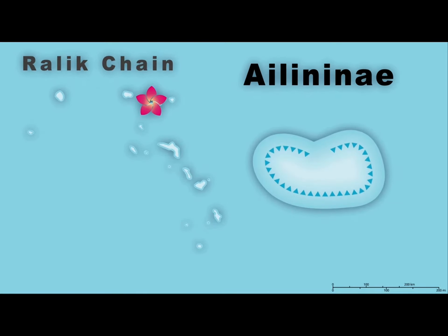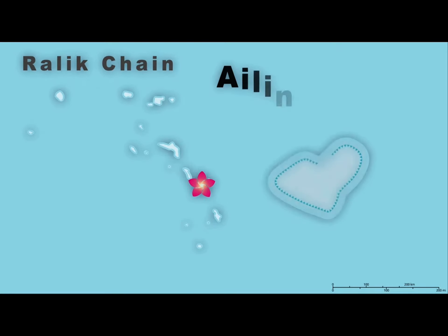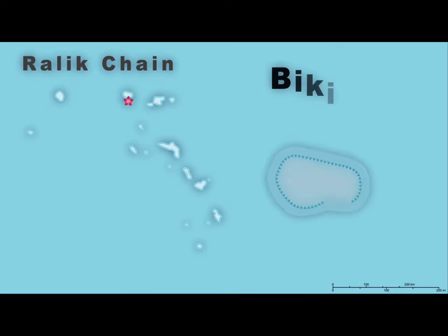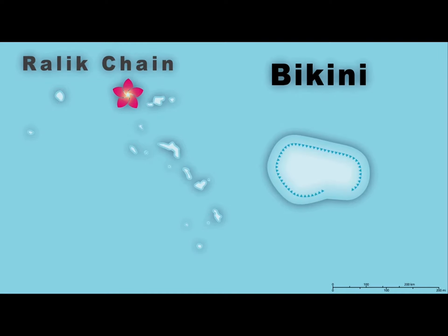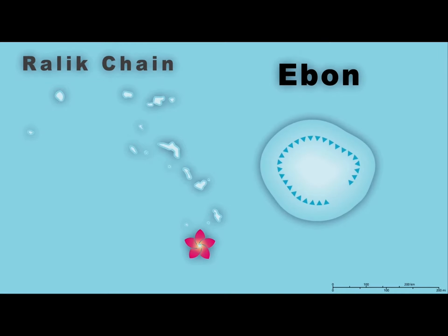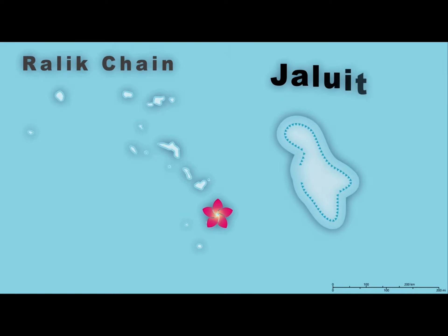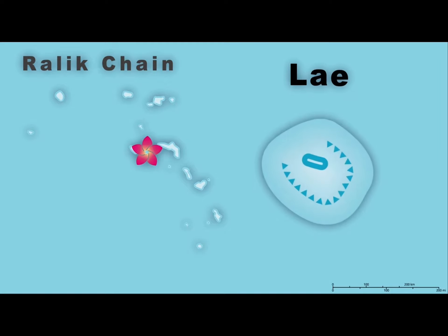This is the Relic Chain, split into eighteen atolls and islands, you soon will see. This is the Alingenay atolls and the Alinglap-lap, the Bikini atolls and Ebon atolls. The Inuitic and Jalewit atolls, Quartaline atolls, and Alei atolls.